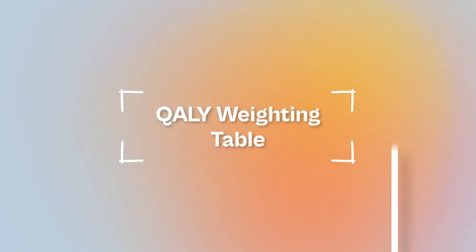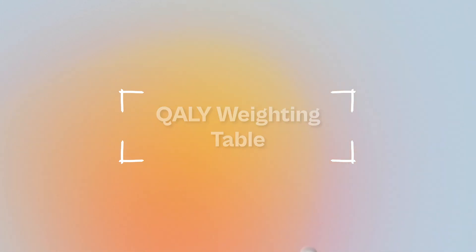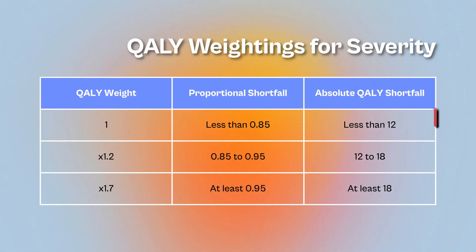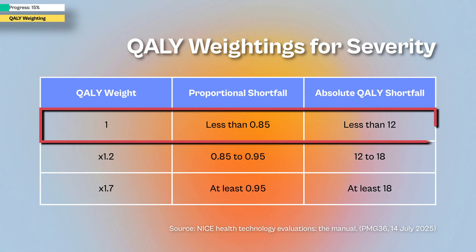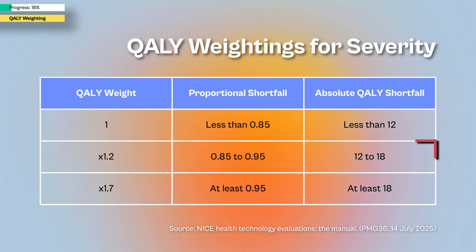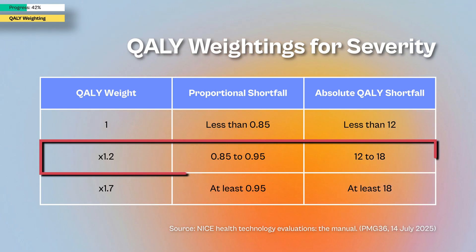Here's how the weighting works. If the proportional shortfall is less than 0.85 or the absolute shortfall is less than 12 QALYs, no extra weight is applied. If the proportional shortfall is between 0.85 and 0.95, or the absolute shortfall is between 12 and 18 QALYs, the QALYs are multiplied by 1.2.